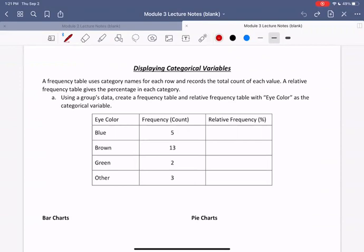In this first section, we're going to look at a frequency table. A frequency table uses category names for each row. For example, what we have here are different eye colors. So we see each eye color has its own row and records the total count of each value in our data set. A relative frequency table, which we will construct here, gives the percentage in each category. And we'll learn and look at how to compute those percentages.